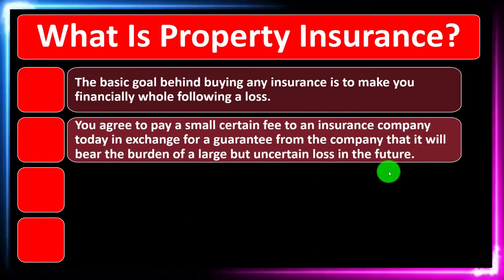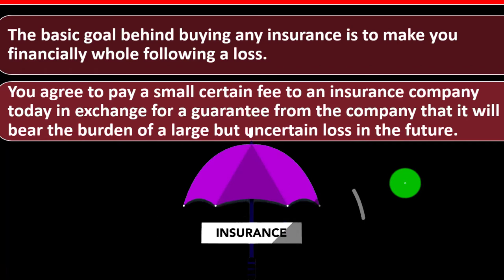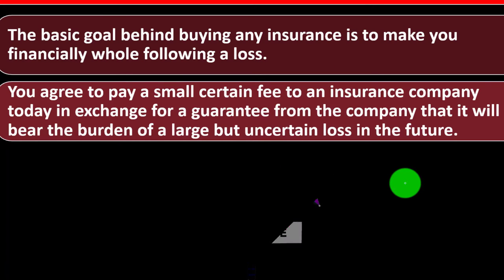You agree to pay a small certain fee to an insurance company today in exchange for a guarantee that it will bear the burden of a large but uncertain loss in the future, contingent on some event that would possibly happen. That's where the shifting of risk happens. If we have fire insurance on the home, we're trying to shift the risk of fire happening to the insurance company. It may be a fairly low risk, but if it were to happen, it would be a substantial financial impact to us.